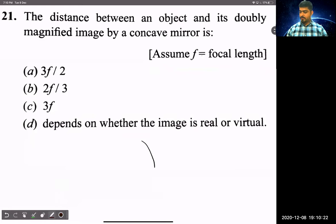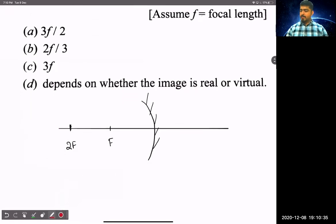This is your mirror. Okay. So, here are two possibilities. This is f and this is 2f. So, the image will be twice the size of the object. This is a possibility.